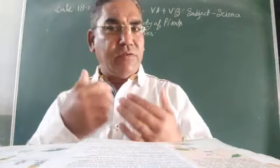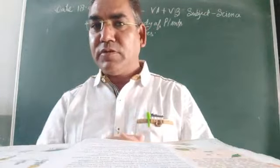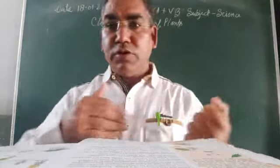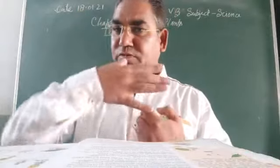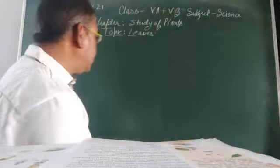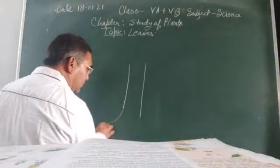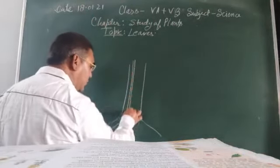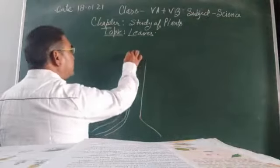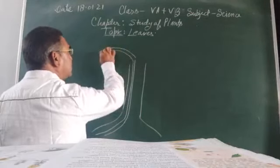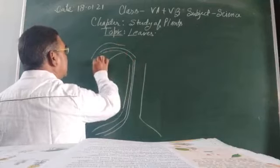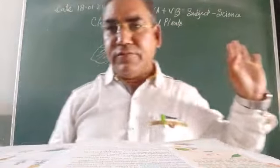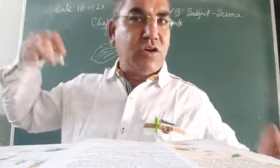We have also seen that there is a tube-like system present from the roots to the leaves. You can imagine - from the roots there is a tube-like structure and these tubes pass from root to the leaves. In this way we have seen the different parts of the plant.